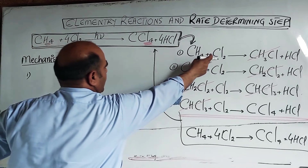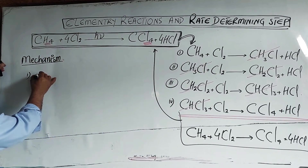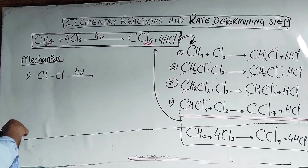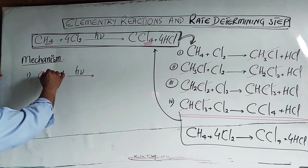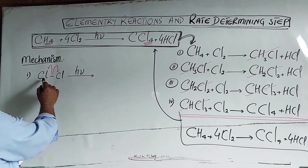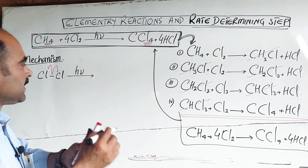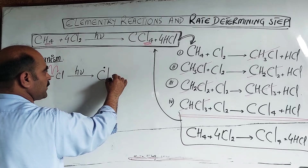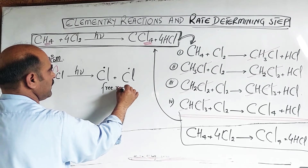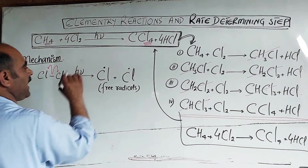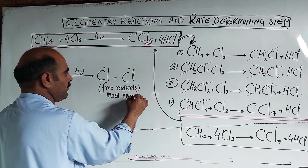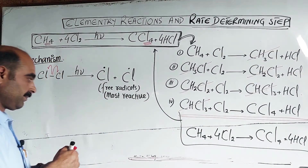When the chlorine molecule undergoes homolysis in the presence of sunlight, it produces free radicals. Species having an unpaired electron are called free radicals. Free radicals are the most reactive among chemical species.